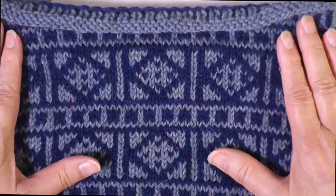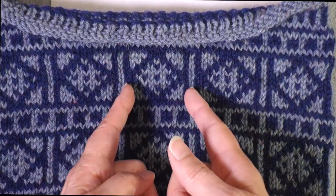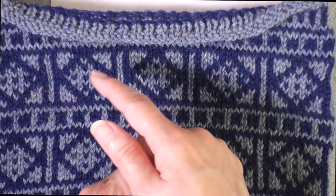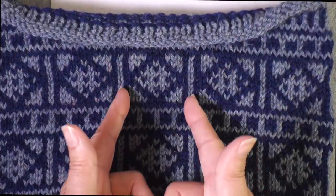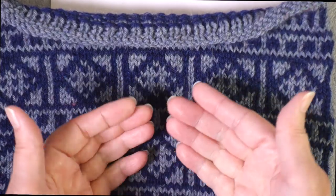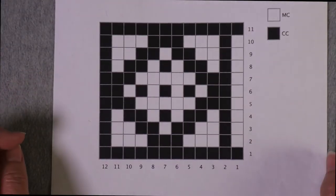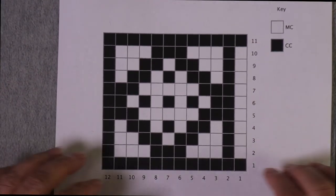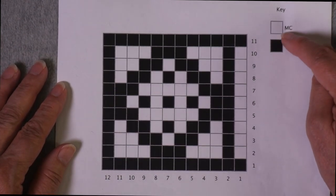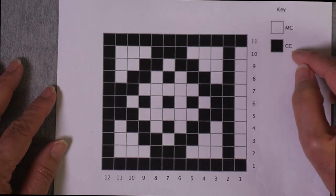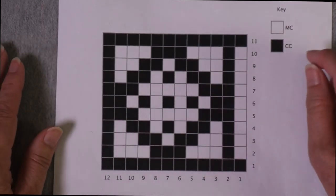So this is a piece of stranded colorwork. And you can see what I have here is this motif right here that just repeats over and over again as it's worked in the round. I have other motifs that separate this motif, but this is the motif right here. And I was working in the round, the right side was always facing me. Here's the chart that I used in order to knit that motif.